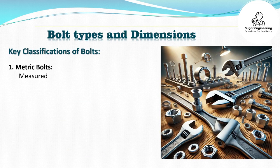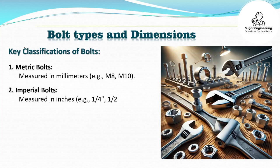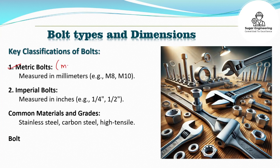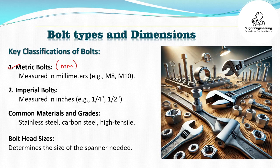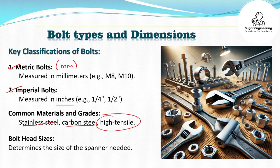Now let's discuss bolt types and their dimensions. Bolts are classified into two categories. Number one is metric bolts — the measurement is taken in millimeters, such as M4, M6, M8, M10. M8 means the bolt size is 8mm. Number two is imperial bolts — the measurement is done in inches, so the bolt size could be one inch, two inches, one and a half inches, etc. Some common materials and grades of bolts include stainless steel, carbon steel, and high tensile bolts, also known as HT bolts.